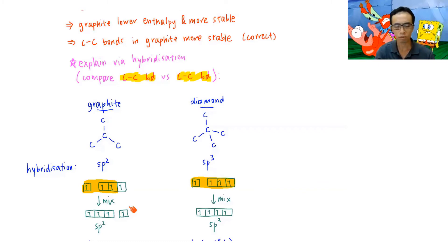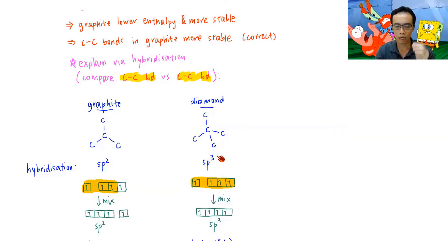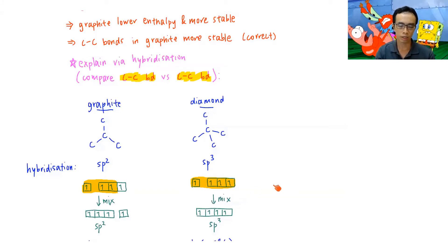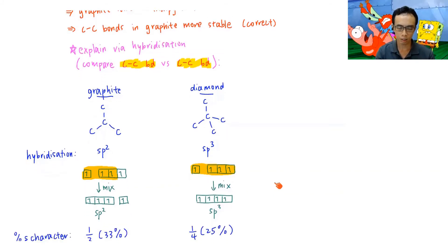For diamond, each carbon is attached to four other carbons. The hybridization is sp3, because you mix four orbitals to get four hybridized orbitals to form four sigma bonds. So diamond carbon is sp3 hybridized.